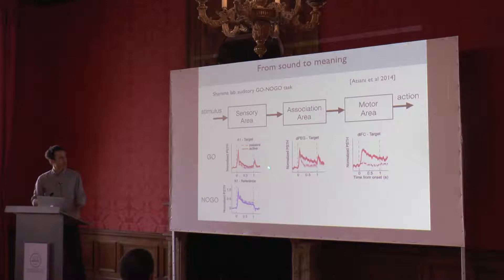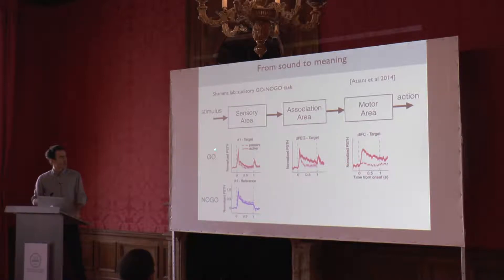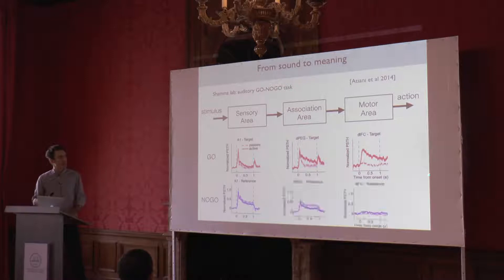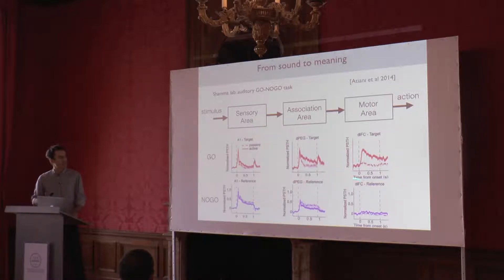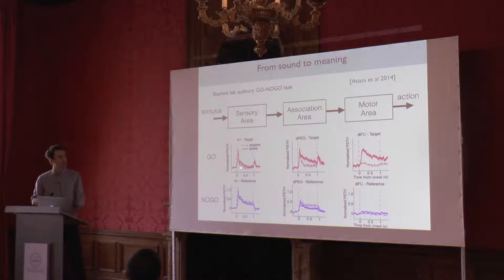If we go higher up through the hierarchy, this difference between the passive and the active responses becomes stronger and stronger. Eventually, in the prefrontal cortex, it responds to the go stimulus only in the active context, but not in the passive context. In the prefrontal cortex, there's actually no response at all to the reference stimulus, whether you look in the active or in the passive context. This is basically consistent with the textbook picture in which sensory areas respond to sensory stimuli but are only weakly modulated by behavior, while higher areas are strongly modulated by behavior and much less by stimuli if the stimuli are not behaviorally relevant.